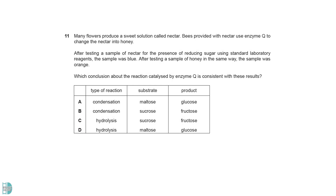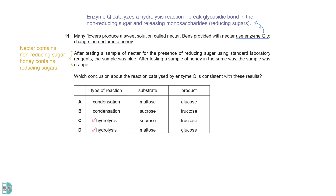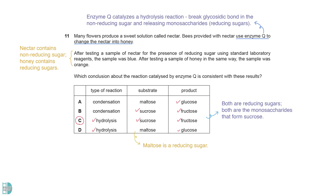The result of the test indicates that nectar contains non-reducing sugar, while honey contains reducing sugars. Therefore, the enzyme catalyzes a hydrolysis reaction, breaking the glycosidic bond in the non-reducing sugar and releasing monosaccharides, which are always reducing sugars. Maltose is a reducing sugar, so it is not correct. Both glucose and fructose are reducing sugars — they are the monosaccharides that form sucrose.